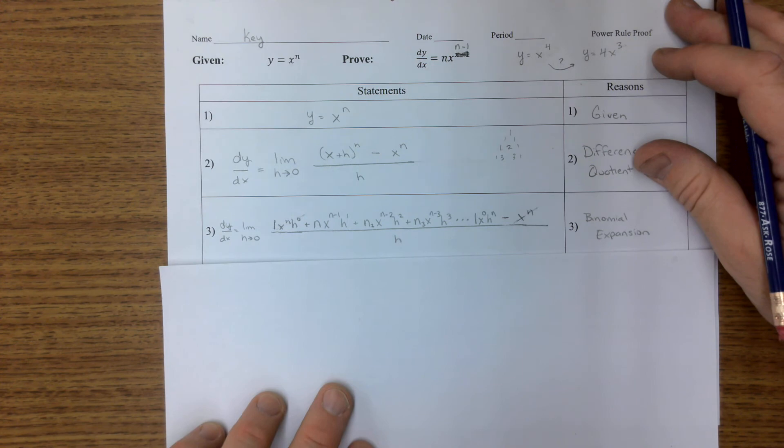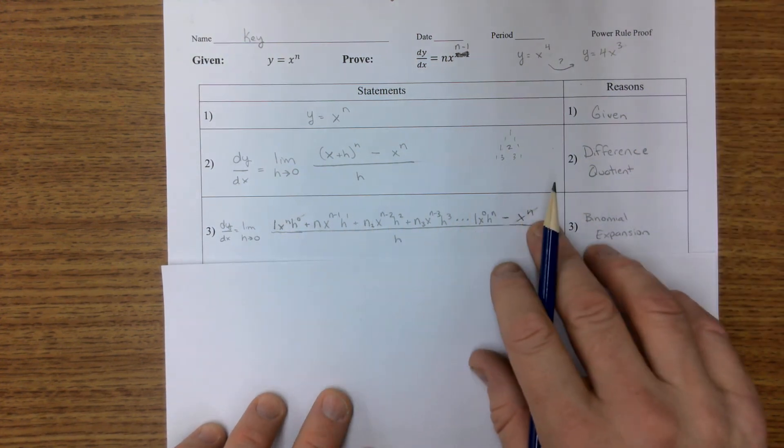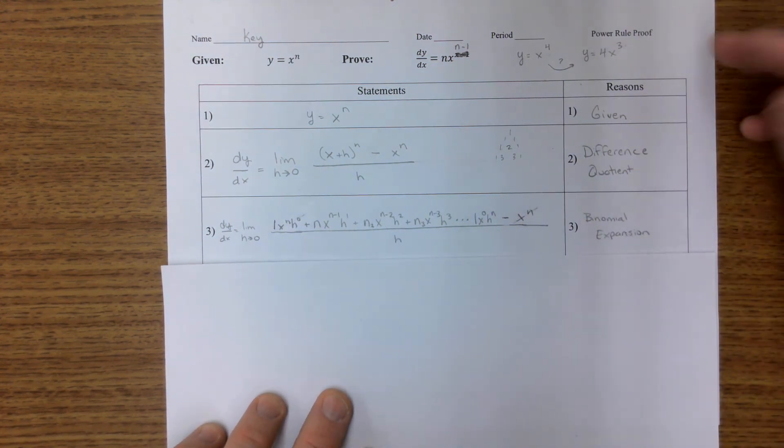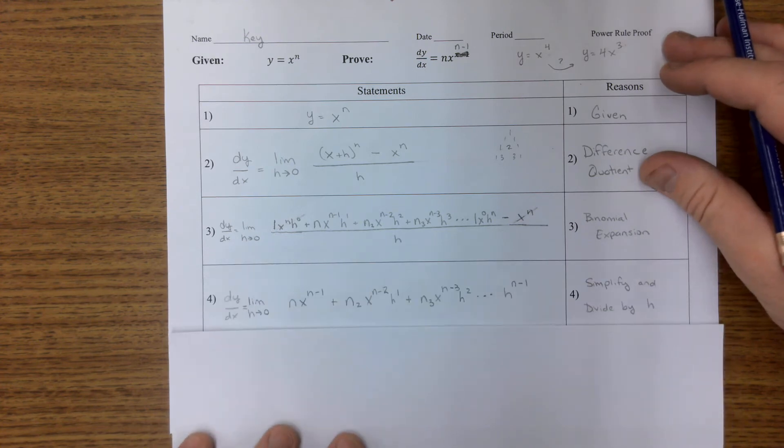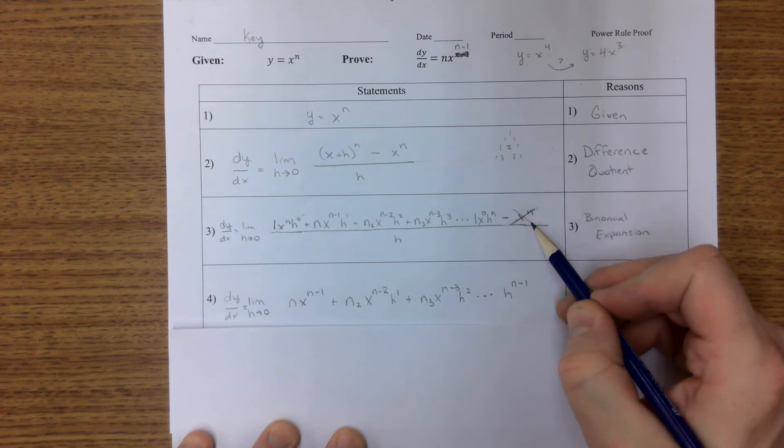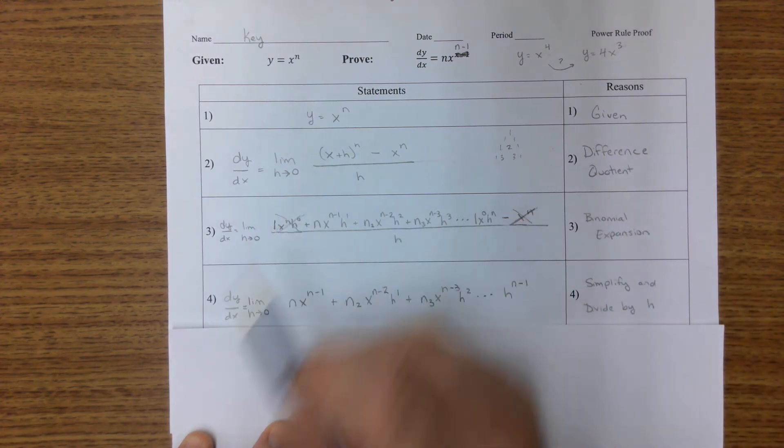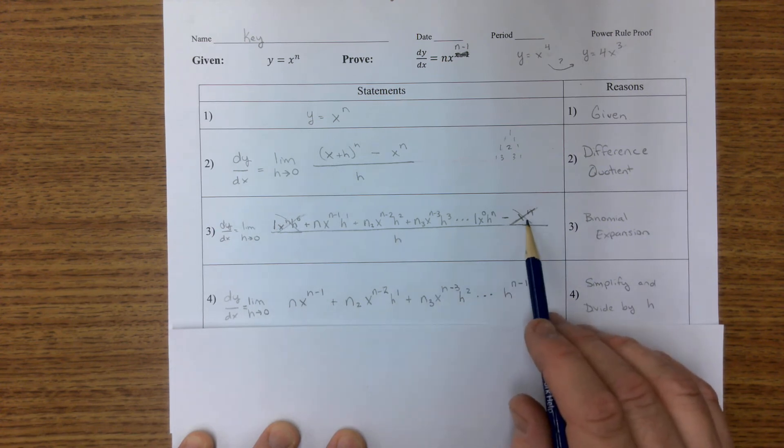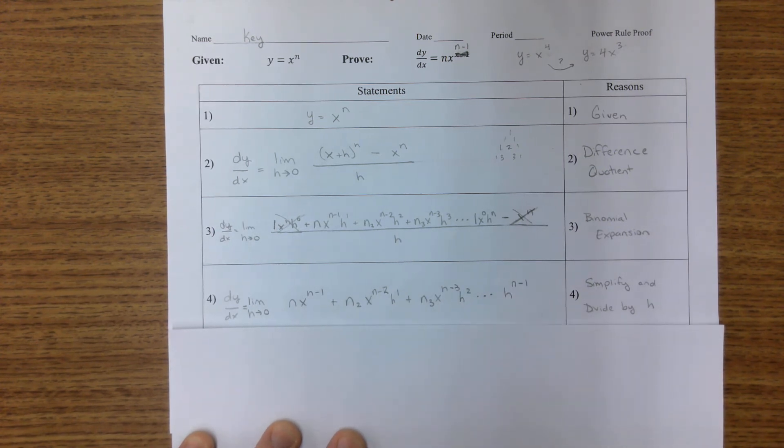All right, now that we have this long expression, binomial expansion, we can do some simplifying. And the first simplifying to see is that this right here is the same as this right here, so they are gone. We have one of them minus one of them, they are gone.